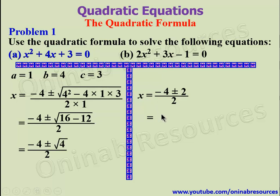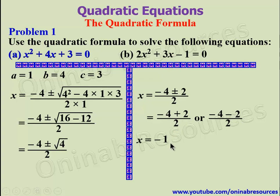Separating the two solutions: negative 4 plus 2 gives negative 2, divided by 2 gives negative 1. And negative 4 minus 2 gives negative 6, divided by 2 gives negative 3. So the values of x are negative 1 or negative 3. That is the end of the solution to problem 1a.